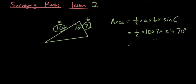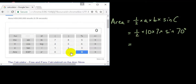So now you can simply just type all of this into the calculator: 0.5 times 10 times 7 times sine 70. Now the important thing to make sure is that your calculator says degrees.